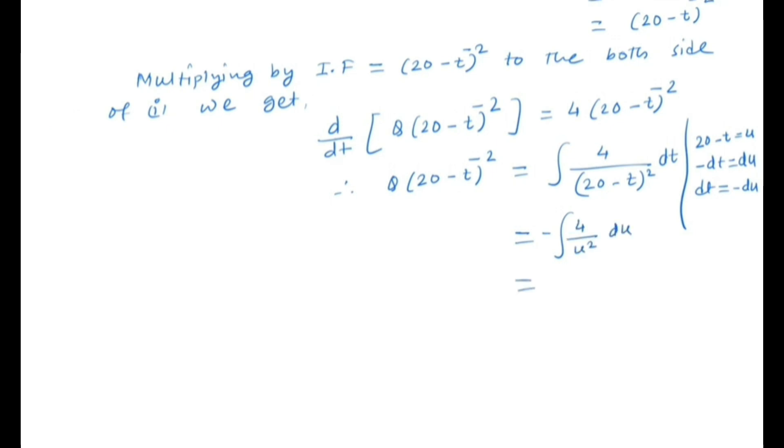We get ∫-4/u² du which is nothing but 4/u + c. Now what is the value of u? u is 20-t.